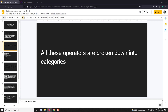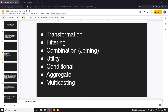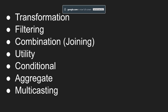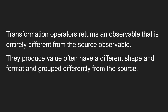All these operators are broken into different types of categories. Let's see what those categories are. The categories present are: transformation, filtering, combination (also called join operators), utility operators, conditional operators, aggregate operators, and multicasting operators. There can be more categories as well, but these are the main ones.